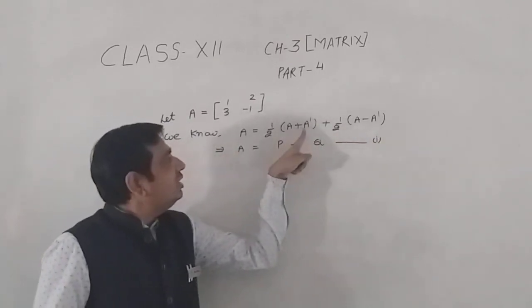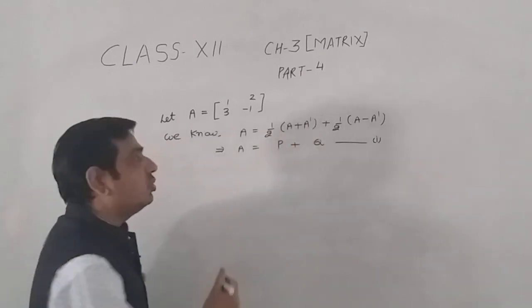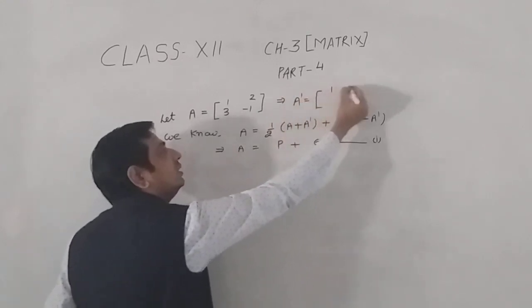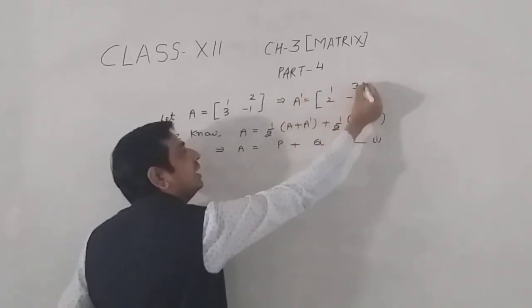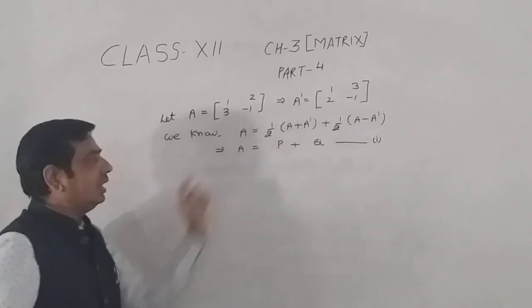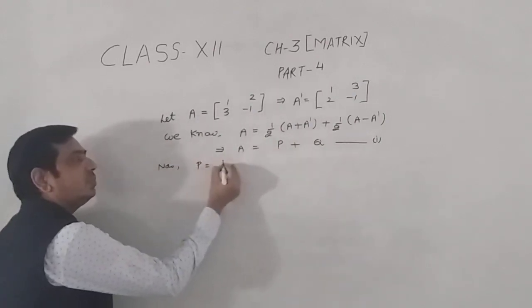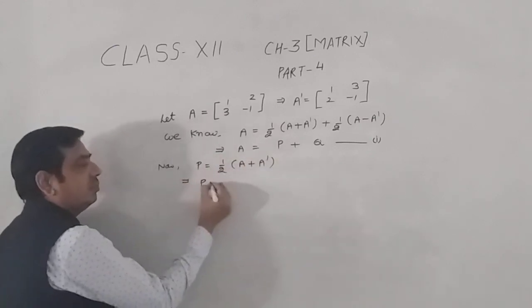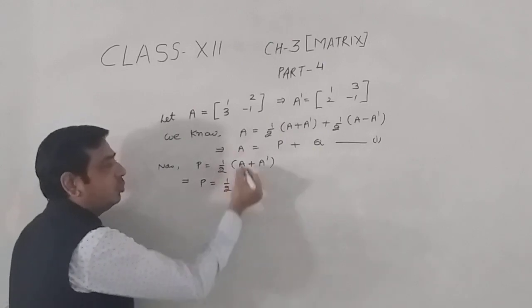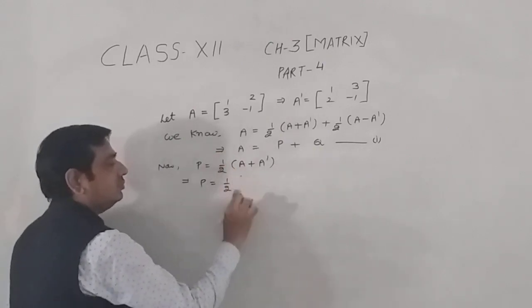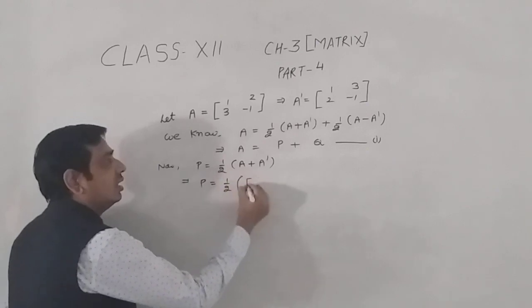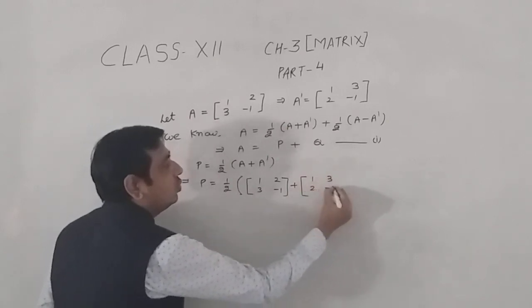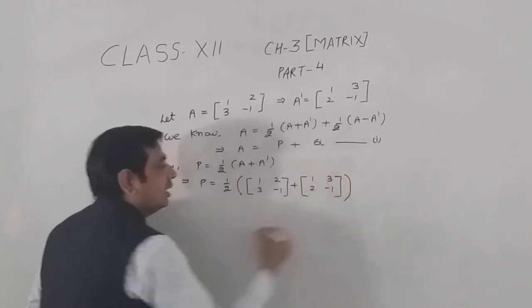So we need P and we need Q, and for that we need A' (transpose of A) as well. Write down the transpose of the matrix: A' is [1, 3; 2, -1]. Now let's solve for P. P is half of (A plus A'), so put in the value of A: [1, 2; 3, -1].